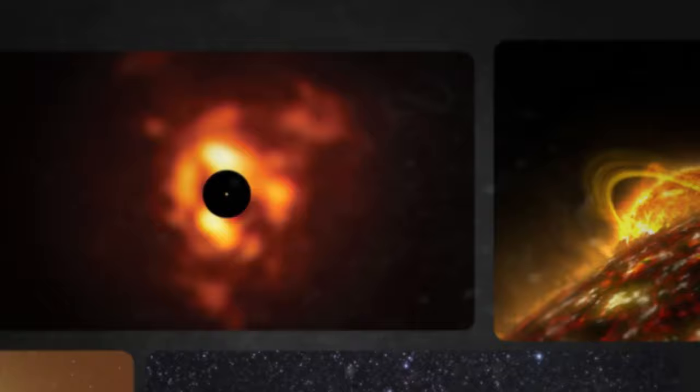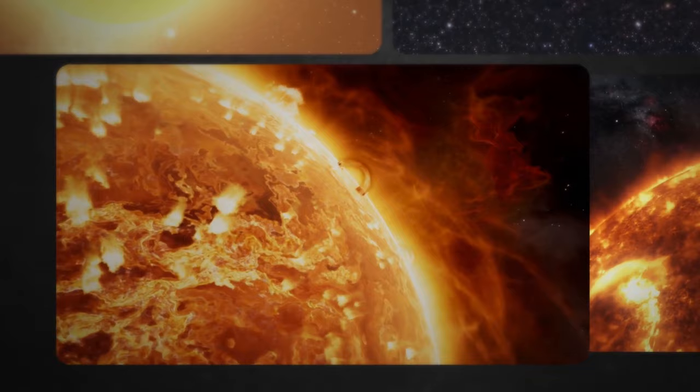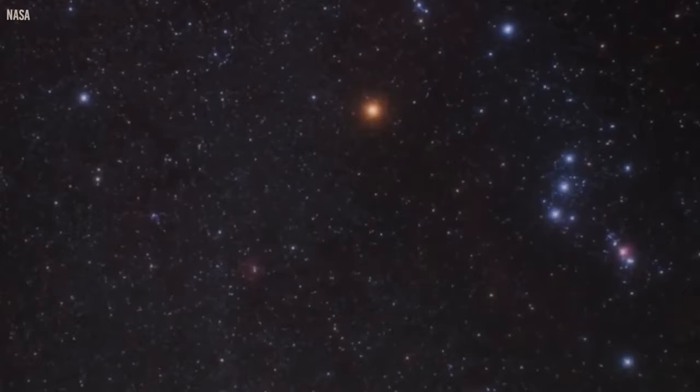Betelgeuse is an absolute giant, approximately 764 times larger than our sun. If it took the sun's place, its surface would stretch beyond the orbit of Mars, swallowing up Mercury, Venus, Earth, and Mars altogether. Its immense size is a clue to where it stands in its life cycle.